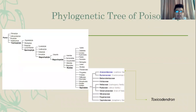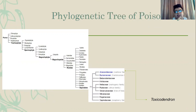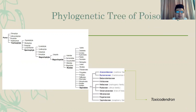This is a phylogenetic tree of Toxicodendron. As seen, it is part of the cashew family. Other members in this branch are the cashews and the mangoes.